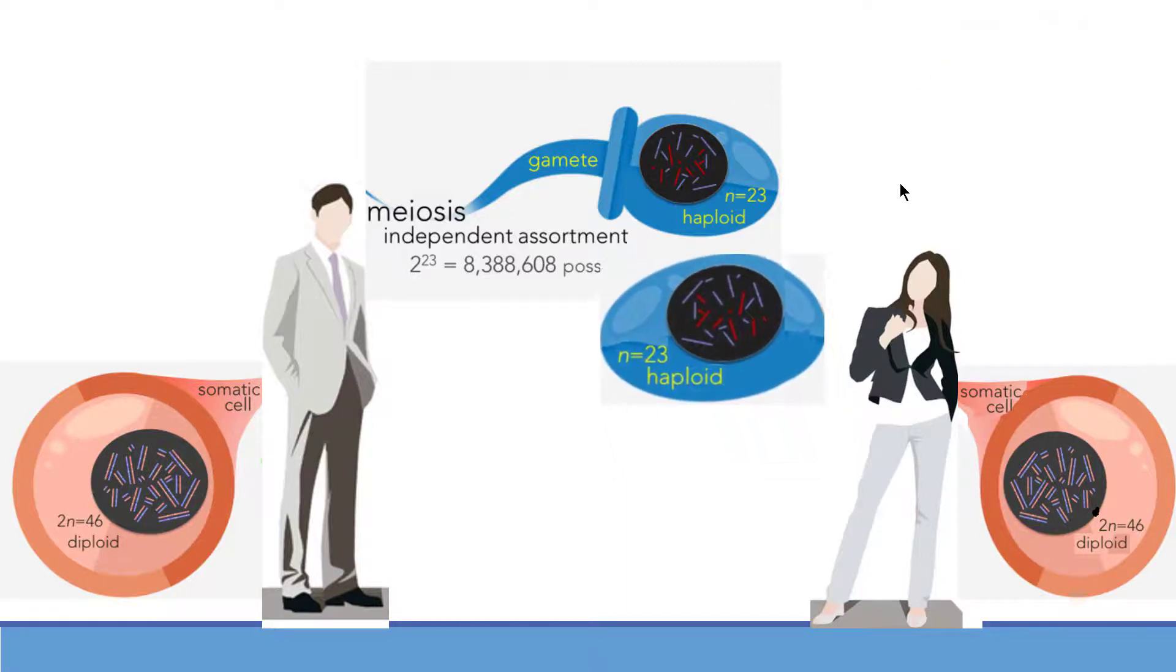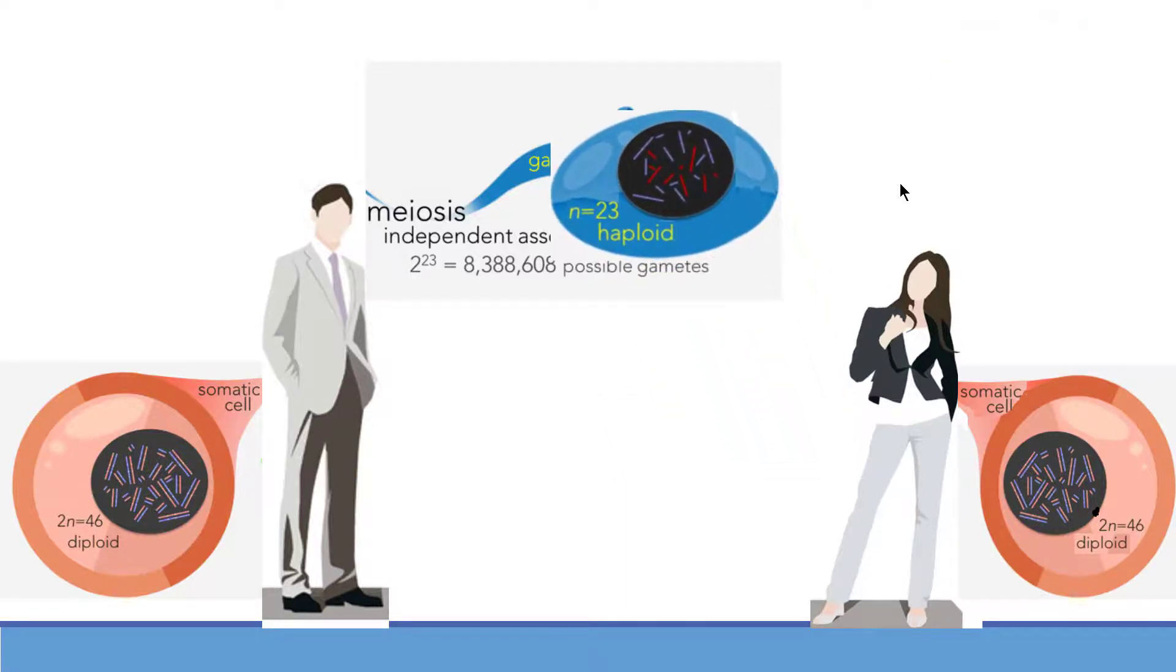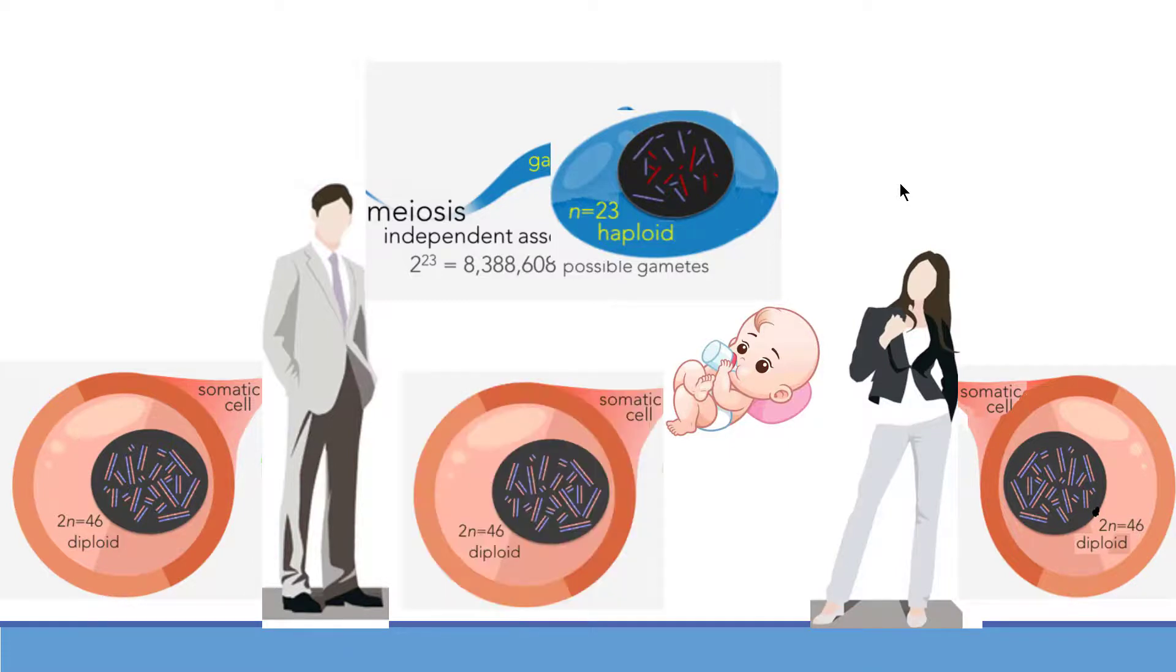During fertilization, the random assortment of unpaired maternal and paternal chromosomes of one gamete fuse with the random assortment of another individual chromosome creating a genetically unique offspring. And this offspring has again 46 chromosomes, the same number contributed by the sperm and egg of both male and female.